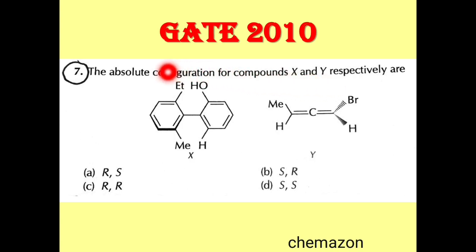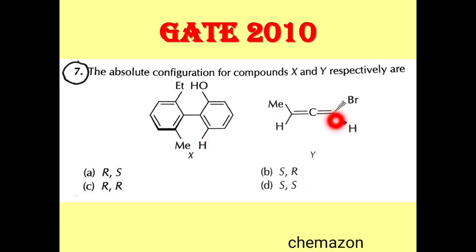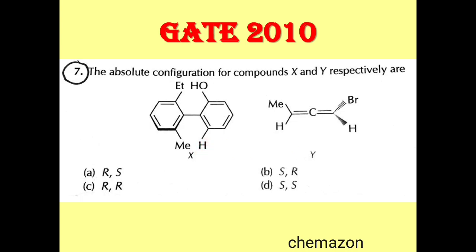Here is another question from GATE 2010: The absolute configuration for compounds X and Y respectively are — you are given two compounds, one is a biphenyl molecule and the other is an allene molecule. You have to find out the absolute configuration for both.